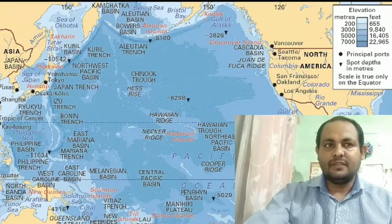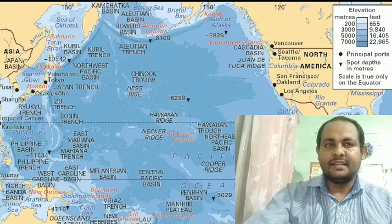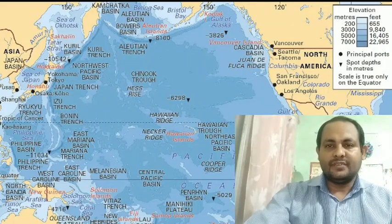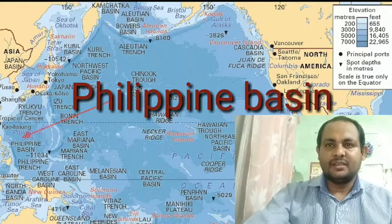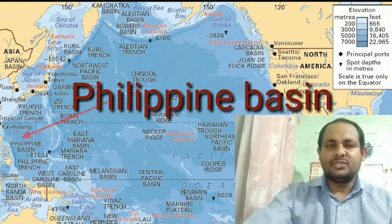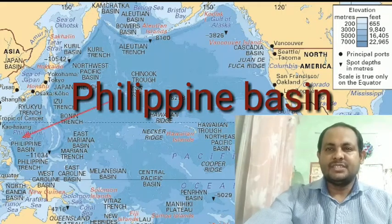The Pacific Ocean has several different basins of different shape and size. These basins are separated by ridges and rises. There are a few important basins of the Pacific Ocean. The first is the Philippines Basin, which is located to the east of the Philippines.